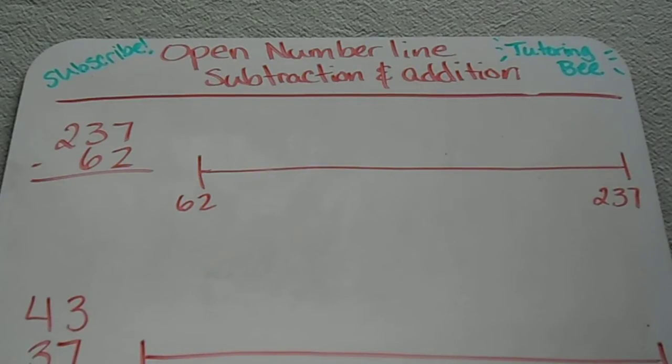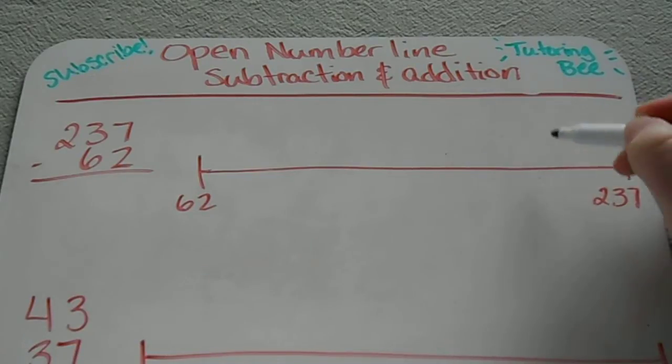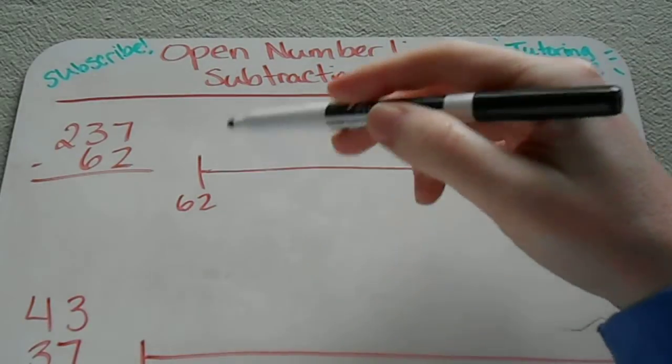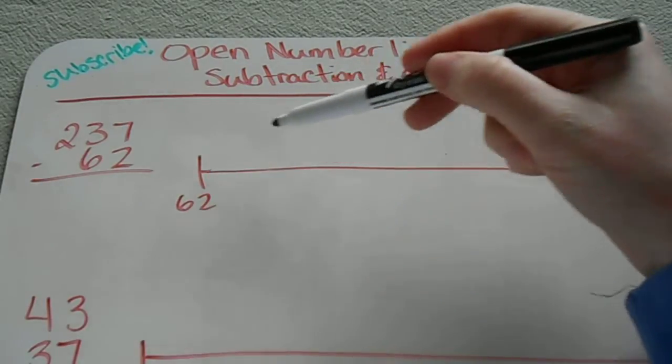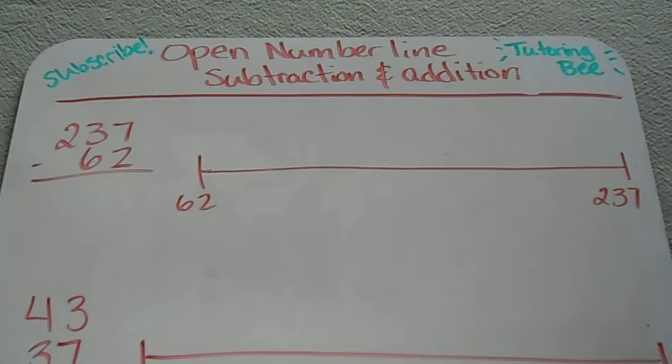I made another video last week that was for subtraction using an open number line and I'm going to show you a slightly different method this time. It's the same concept except before I started at the larger number and made jumps down to the smaller number. I'm just going to show you how you can do the same thing by starting at the smaller number and making jumps up to get to the bigger number.